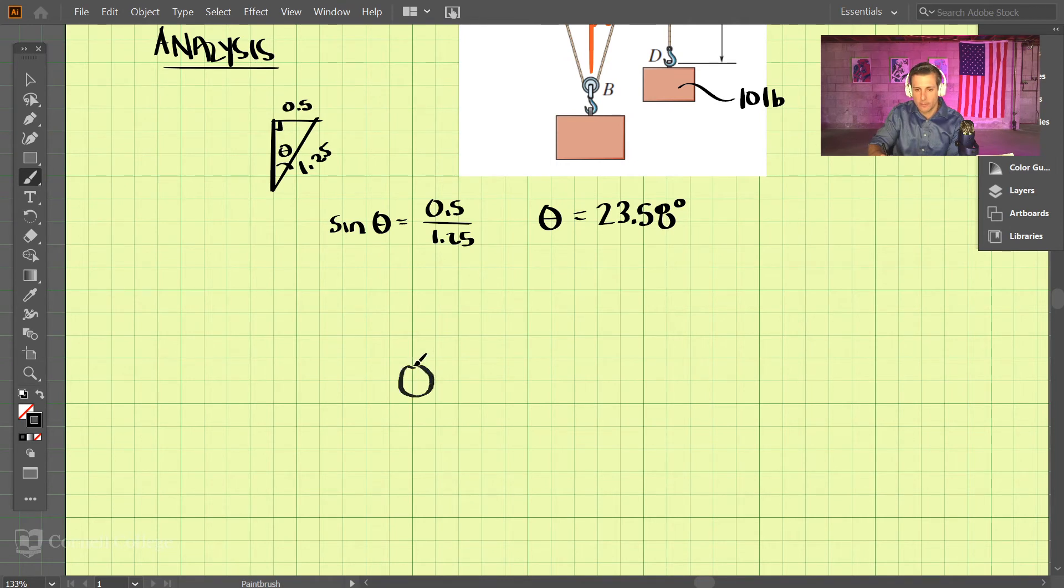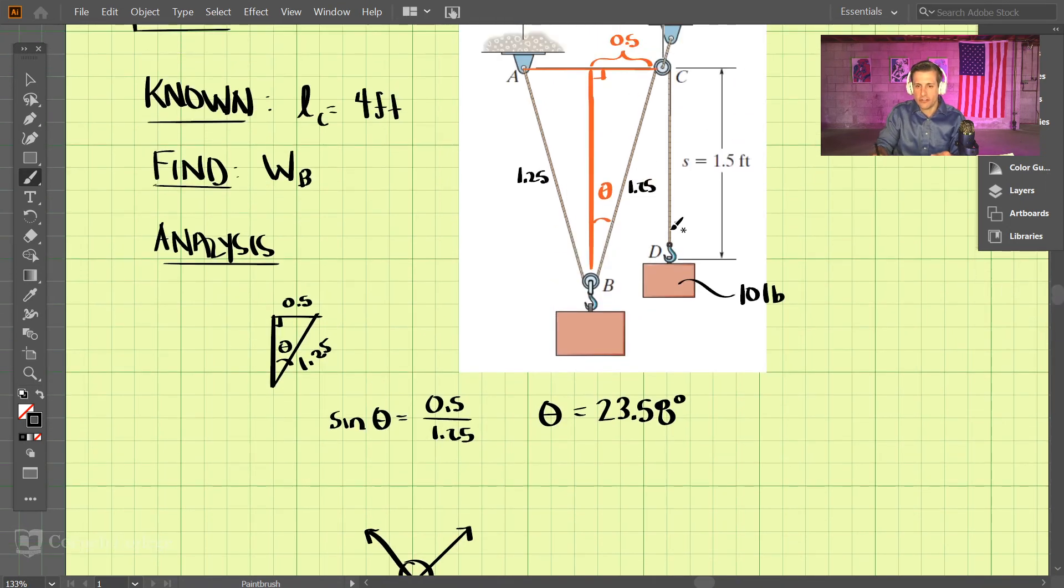So we have the pulley here, and we have the weight of the block B downward, and then we have the tension here of the two pieces of cable that are pulling up. And do we know the tension on that cable? Well, yeah we do, because the tension's not going to change as it goes around any pulleys here, and we know that pulling down here is 10 pounds.